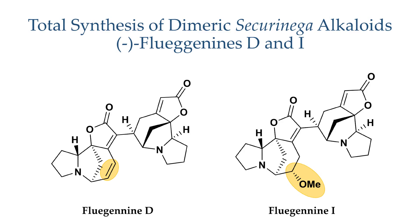With this conjugate addition complete, we have completed the syntheses of fluganines D and I. This work is the first synthesis of dimeric Securinega alkaloids which bear an alpha-delta connectivity between the subunits. It is notable for its stereocontrolled conjugate reduction strategy and its different approaches to constructing butenolide rings, and it opens up new avenues to synthesize Securinega alkaloids which we will no doubt see implemented in future.